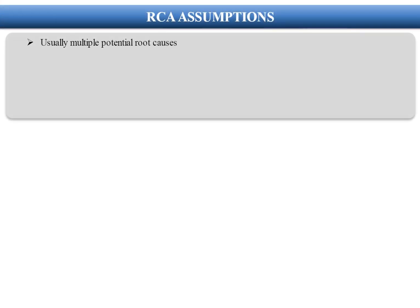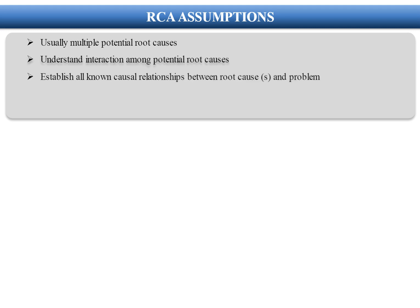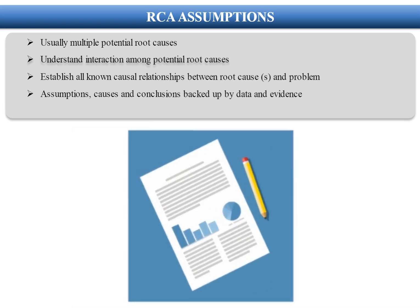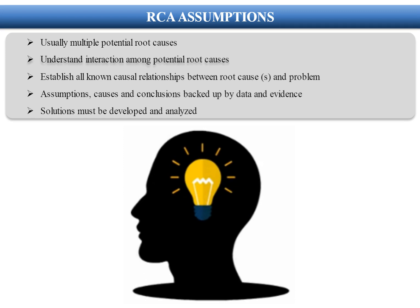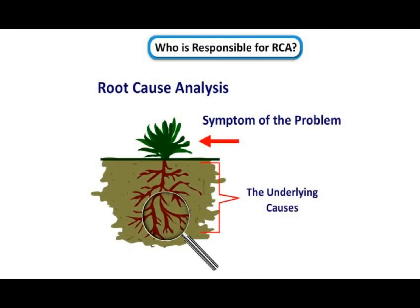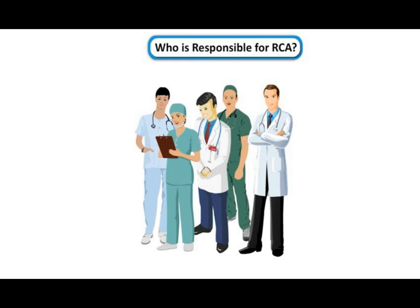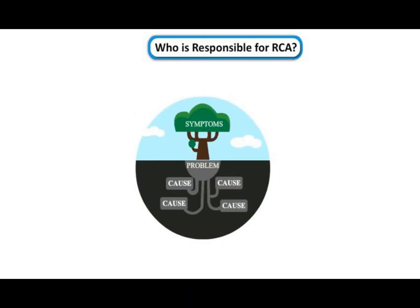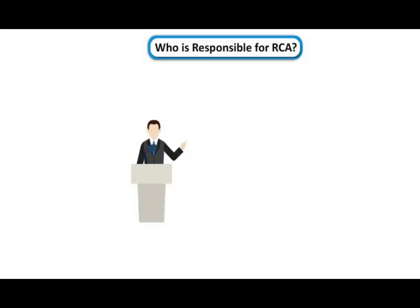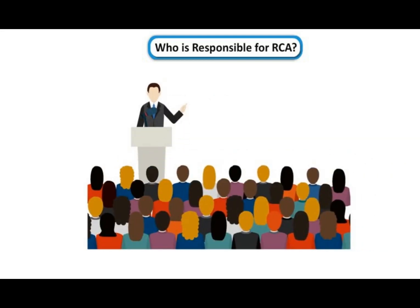RCA Assumptions: There are usually multiple potential root causes. It is important to understand the interaction among potential root causes and establish all known causal relationships between root causes and the problem. Causes and conclusions must be backed up by data and evidence, and solutions must be developed and analyzed. RCA investigations are conducted by multidisciplinary teams who seek to determine the root causes of an incident and provide recommendations about how to avoid its recurrence. Individuals in each health service who have been trained in the RCA methodology may assist with the investigation.